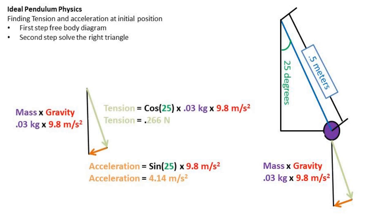we can solve the right triangle for the tension portion and the acceleration portion. So the tension will equal the cosine of the angle times the mass times gravity. And in this case, it is equal to 0.266 newtons.